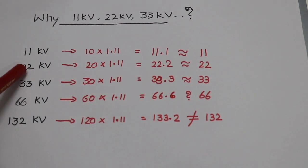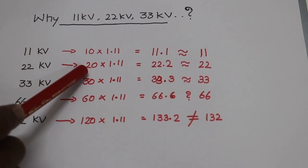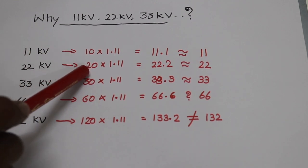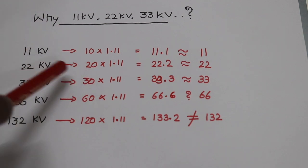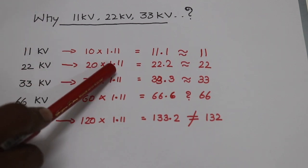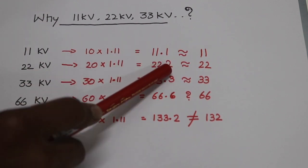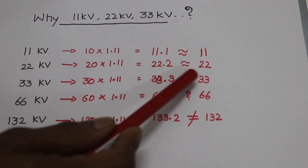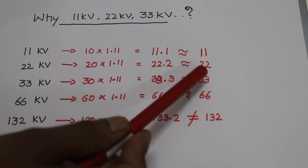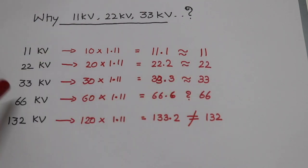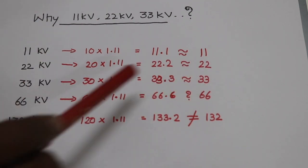Second, in this case, we will transmit 20kV. That is the receiving end. The form factor gives 22.2kV, which is approximately 22kV.